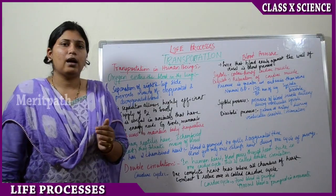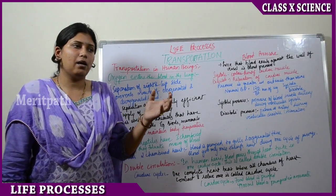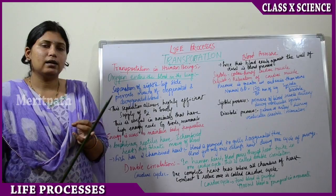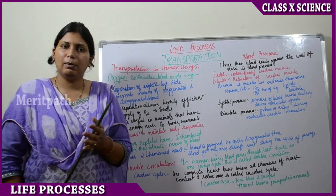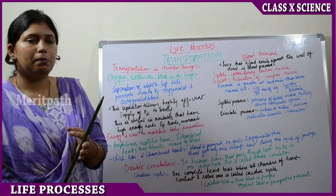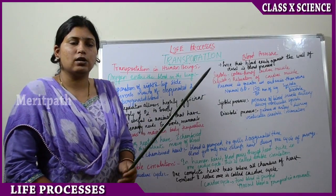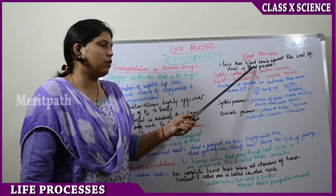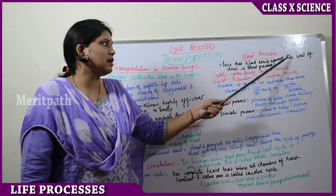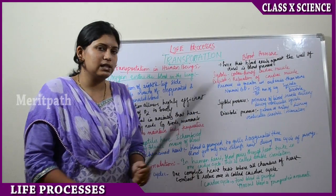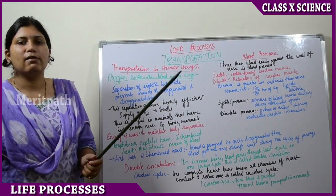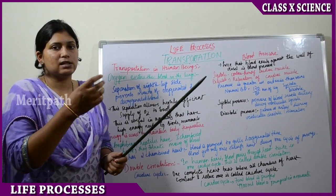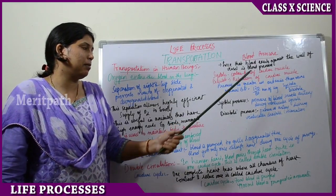Blood pressure is the force that blood exerts against the walls of the vessels while traveling through them. In blood pressure measurement there are two values: systole and diastole. Systole is contraction of the cardiac muscle, and diastole is relaxation of the cardiac muscle.